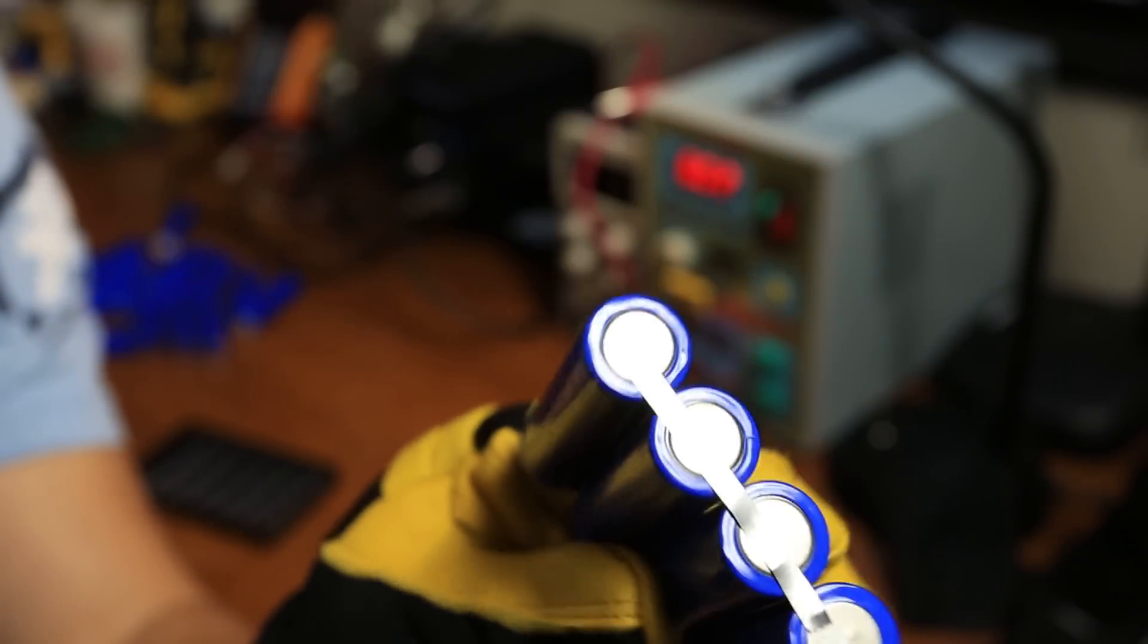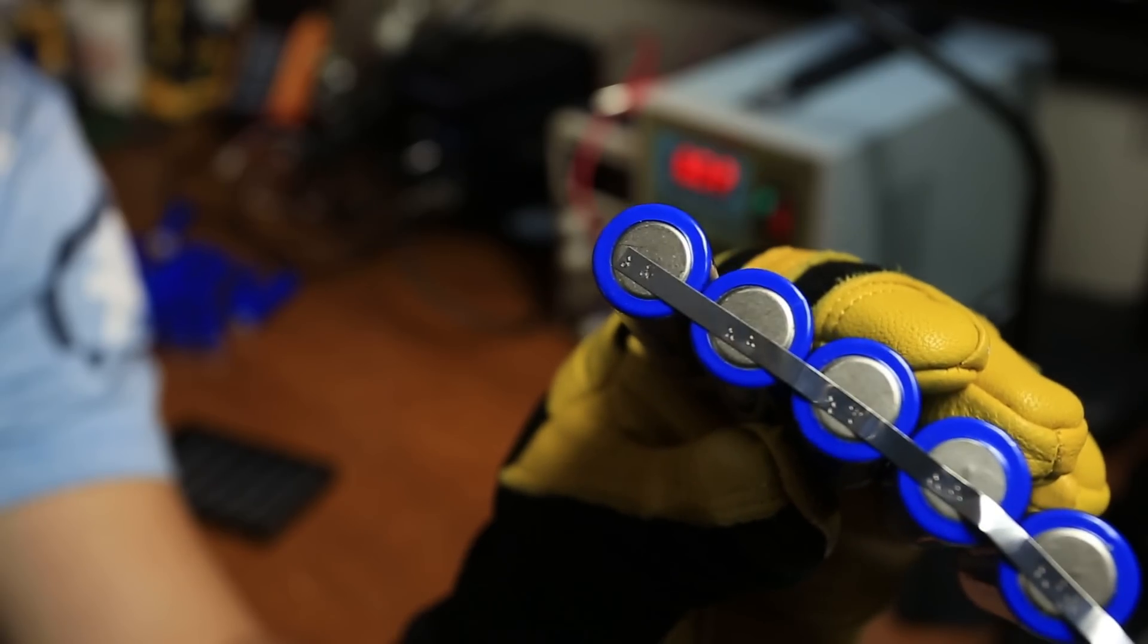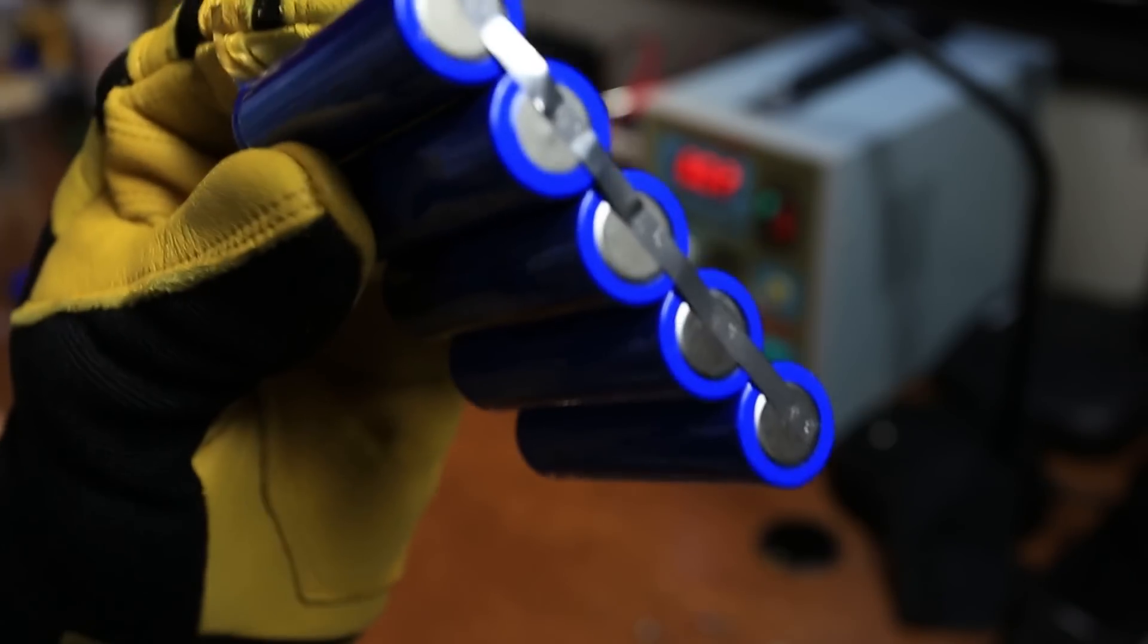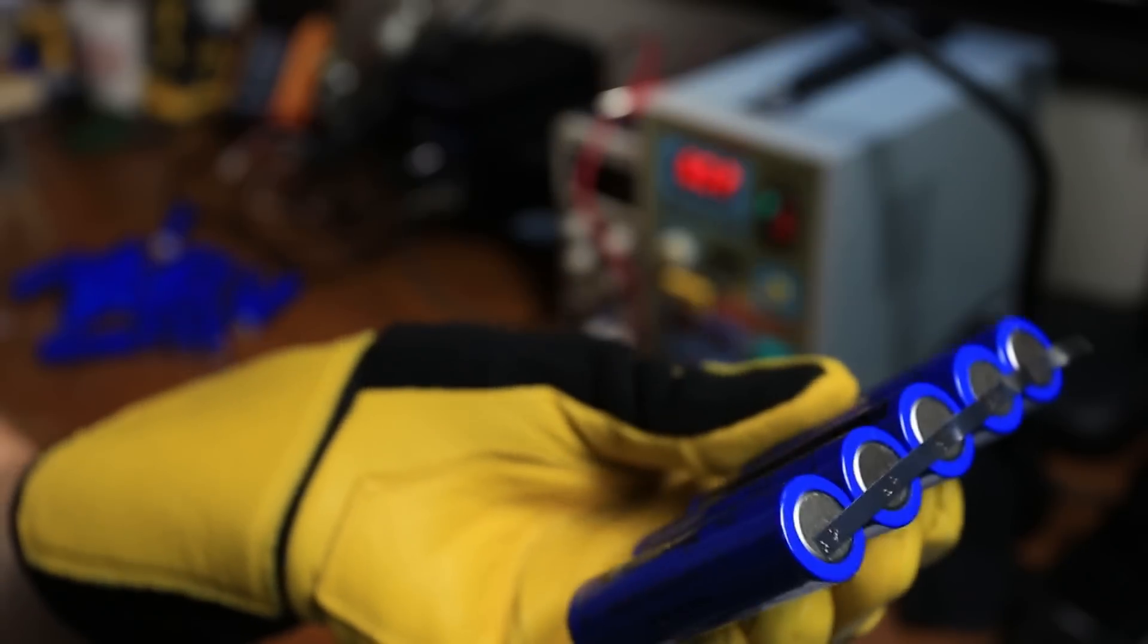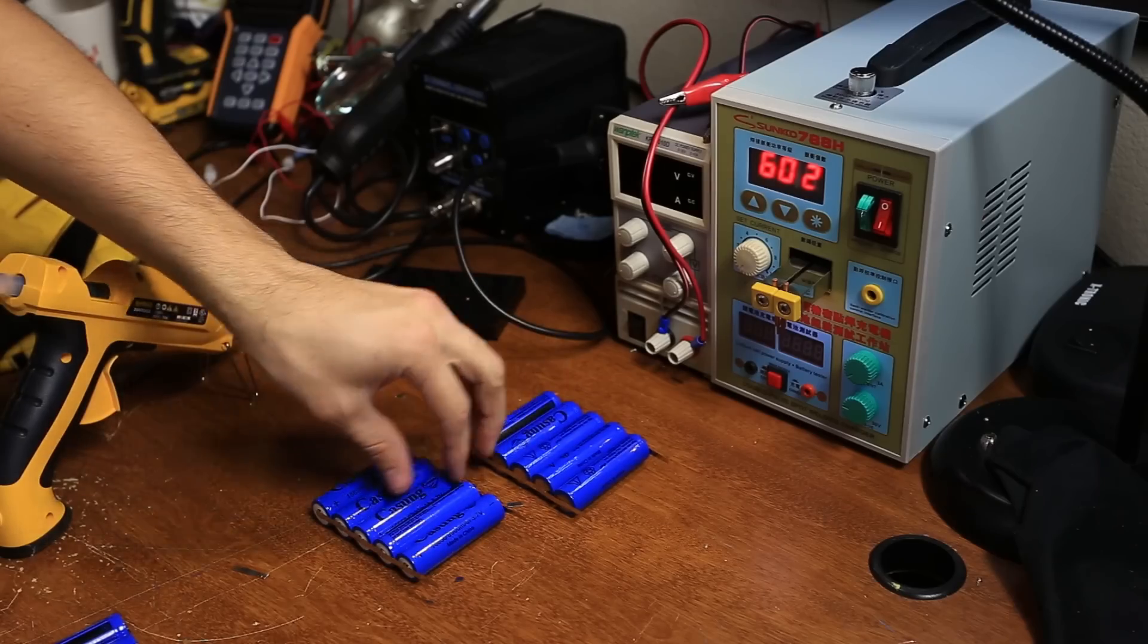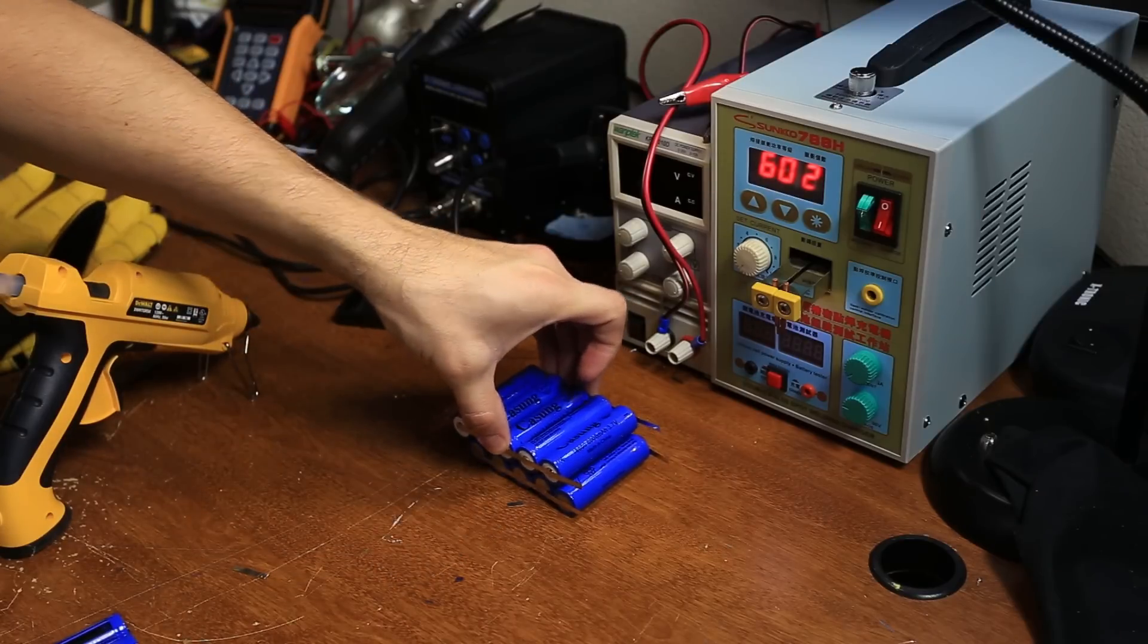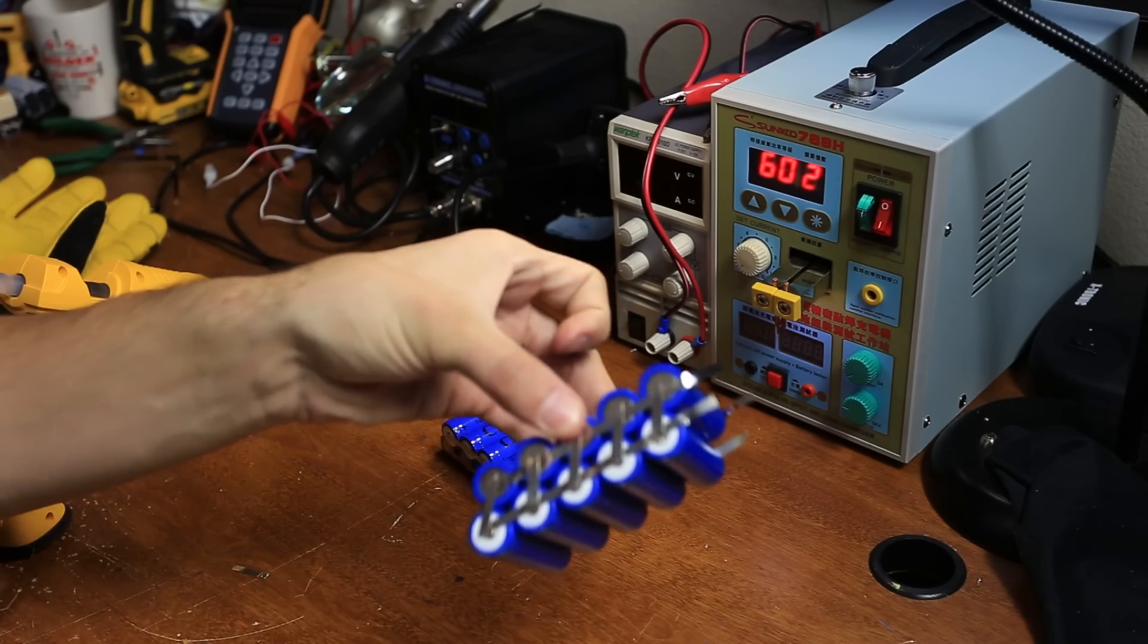I'll show you what these welds look like - you can see they're just spot welded on there. We're gonna make three more of these things, we're gonna weld these all together, and we're gonna hot glue them all together for a little bit more stability, and we're gonna have a high voltage battery pack.